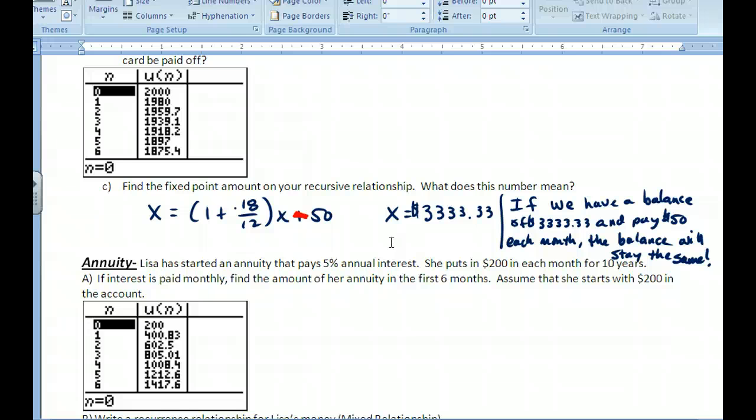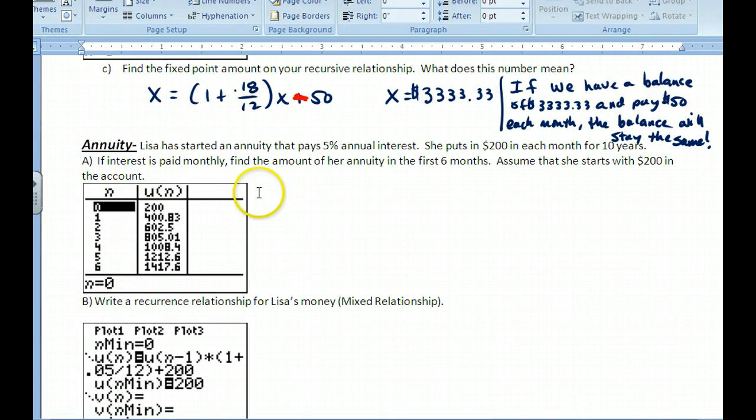Lisa has started an annuity that pays 5% annual interest. She puts in $200 each month for 10 years. Find the amount of her annuity in the first six months. Assume that she starts with $200 in the account.